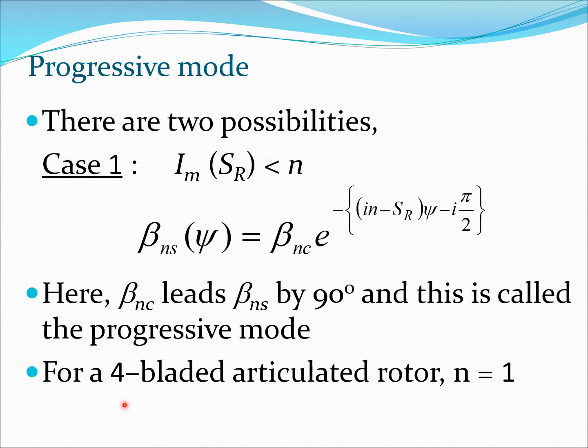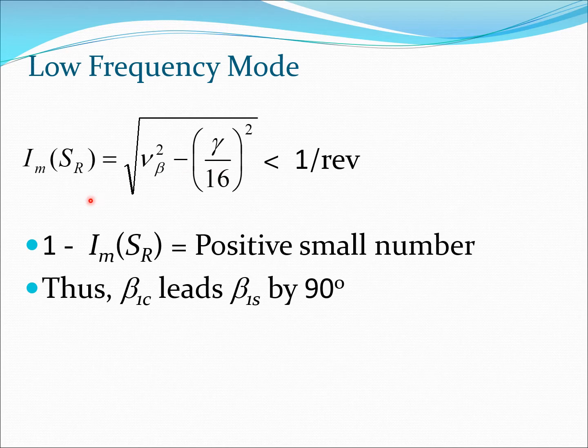Just to give some numbers to this whole problem, let us take a four-bladed articulated rotor. We know N would be 1. We also know that for such a rotor the imaginary part of SR would be less than 1 per rev, for example we had calculated 0.87. So 1 minus 0.87 would be a small positive number. Therefore beta 1C leads beta 1S by 90 degrees and the frequency of this mode is a small positive number, that is why it is called a low frequency mode.